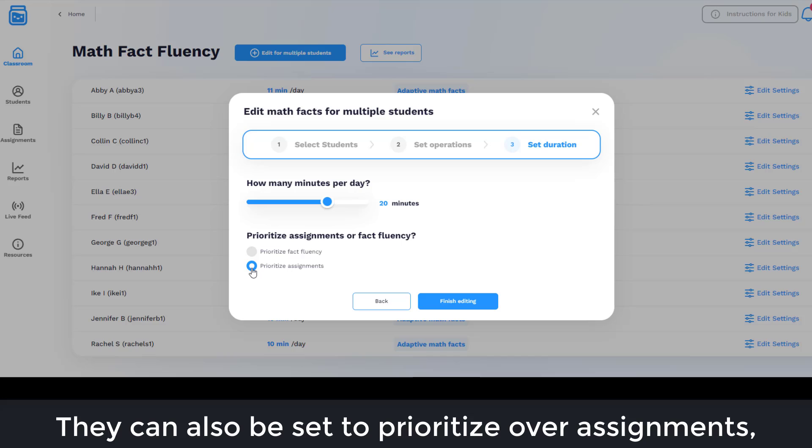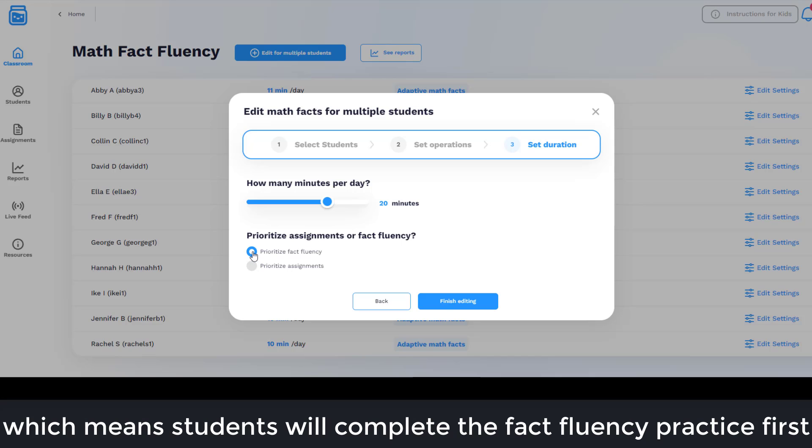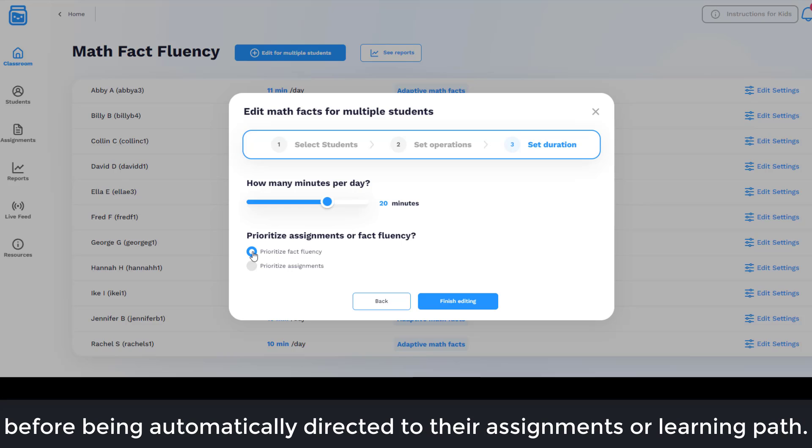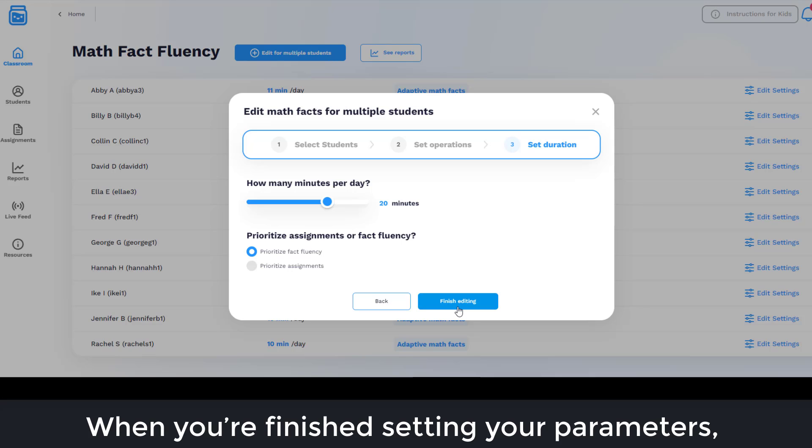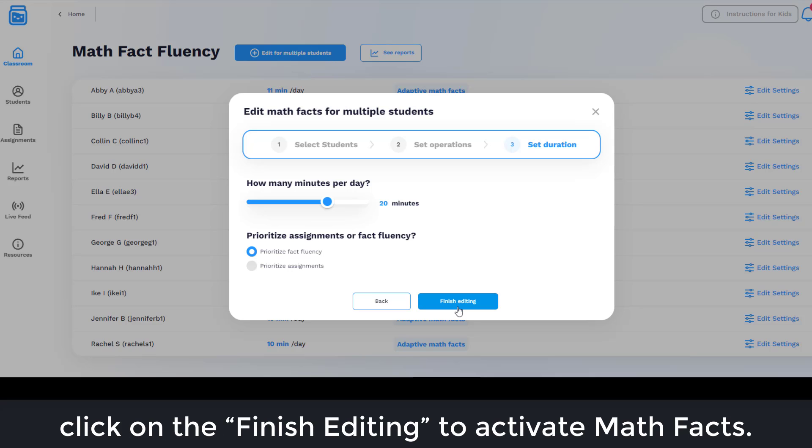They can also be set to prioritize over assignments, which means students will complete the fact fluency practice first before being automatically directed to their assignments or learning path. When you've finished setting your parameters, click on Finish Editing to activate Math Facts.